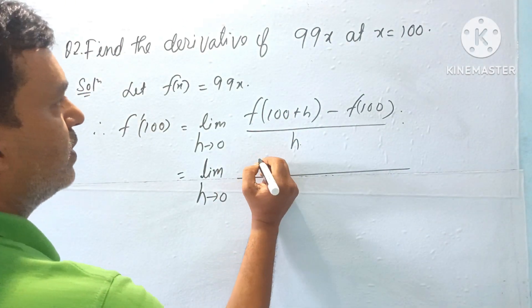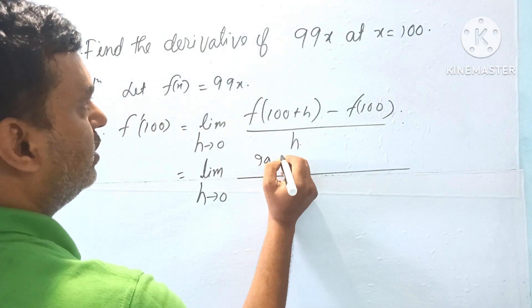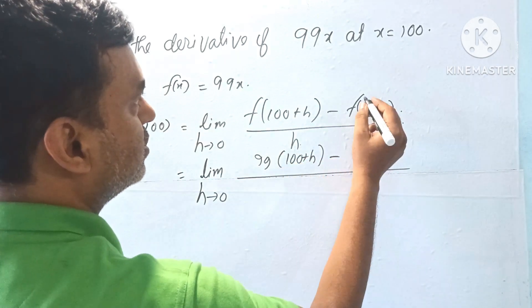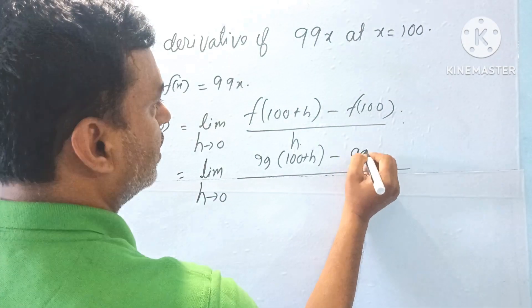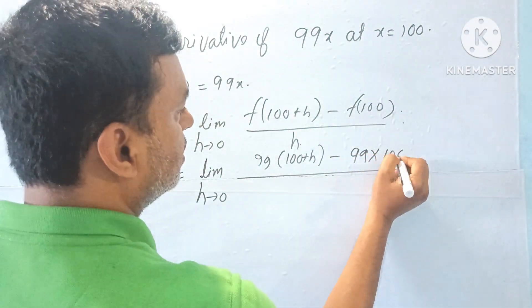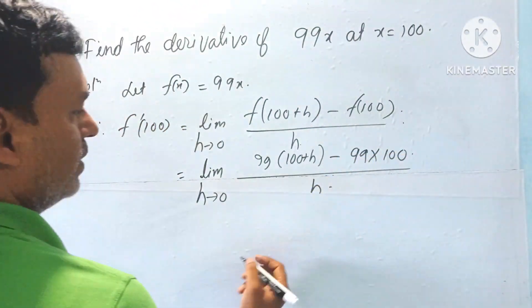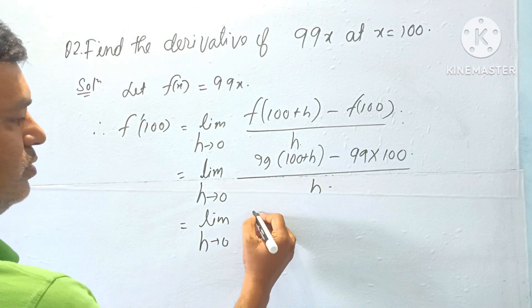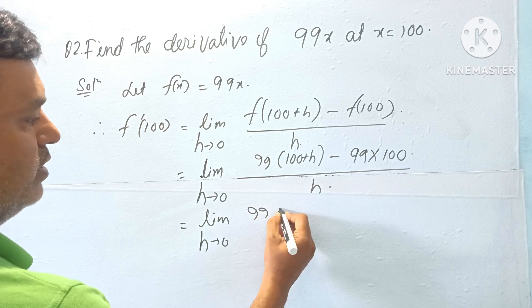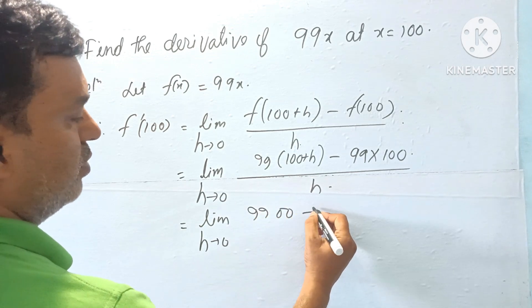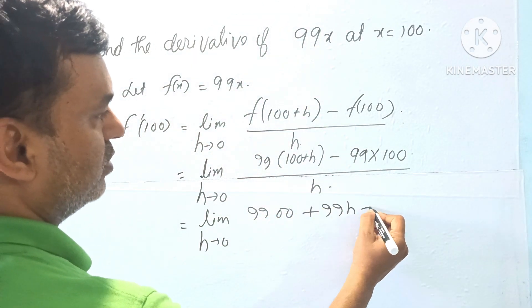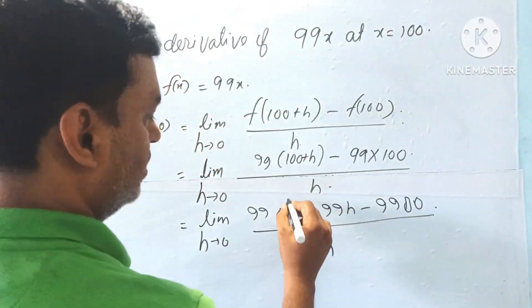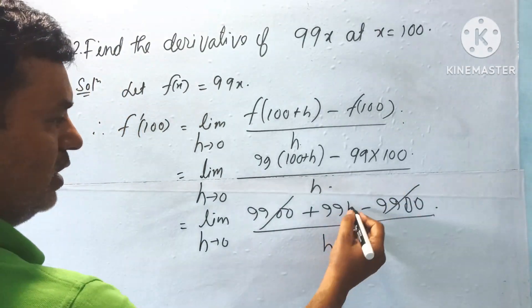Substituting: 99 times 100 plus h minus 99 times 100, all by h. Limit h tends to 0. This gives us 99 times 100 plus 99h minus 99 times 100, divided by h. The 9900 terms cancel, h cancels.